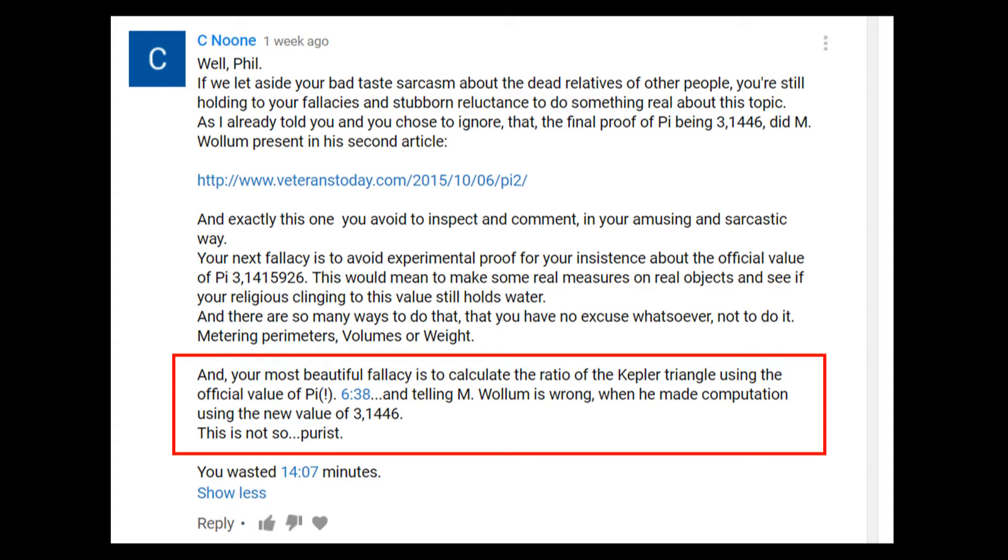C Noone, for example, thinks it's a fallacy to use the traditional value of π in the calculations I've just shown, but it's not a fallacy to use Wolham's proposed π. Of course you can't have it both ways—if you can't use one value, you can't use the other. You need to find another approach to demonstrate that the two triangles are similar or congruent or Keplerian that doesn't use the value π to do so.